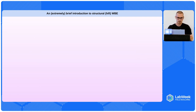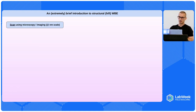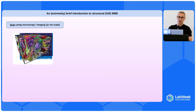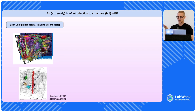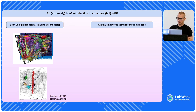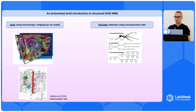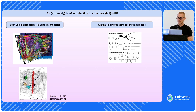I'll try to explain structural whole brain emulation, though I don't really work in this field. The idea is roughly to scan the brain using microscopy or some other imaging technique at very high resolution, then reconstruct the brain and then simulate it. Pick your favorite compartmentalization model — you can break up each cell into many compartments or cables, whatever model you want to do, then distribute dynamical properties across the cell and run them into some simulation.